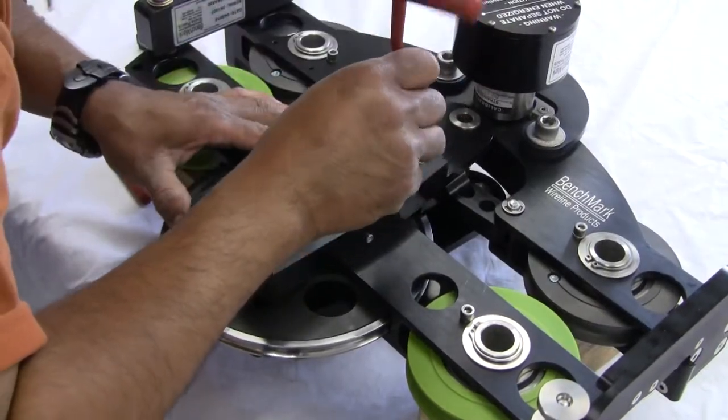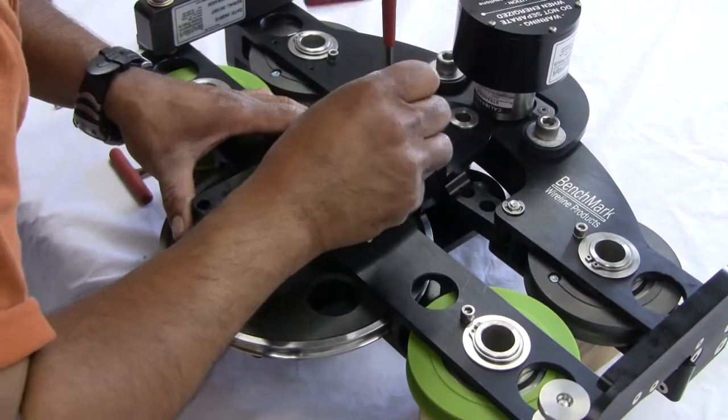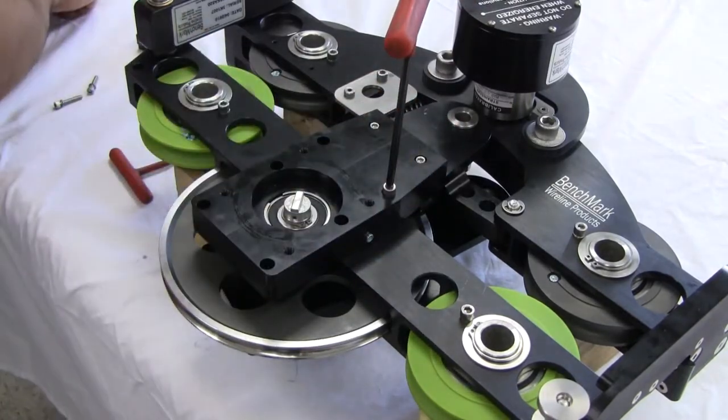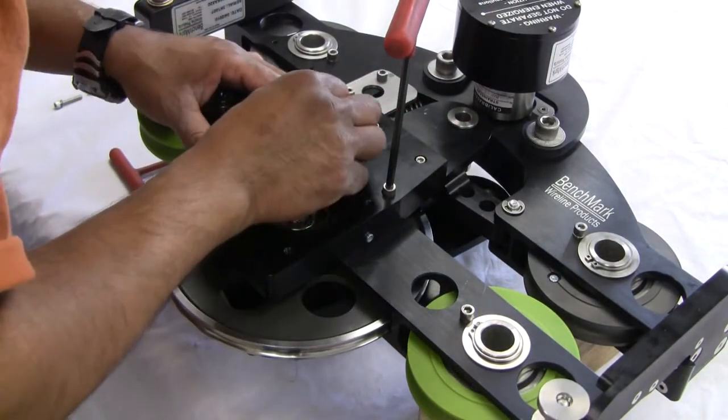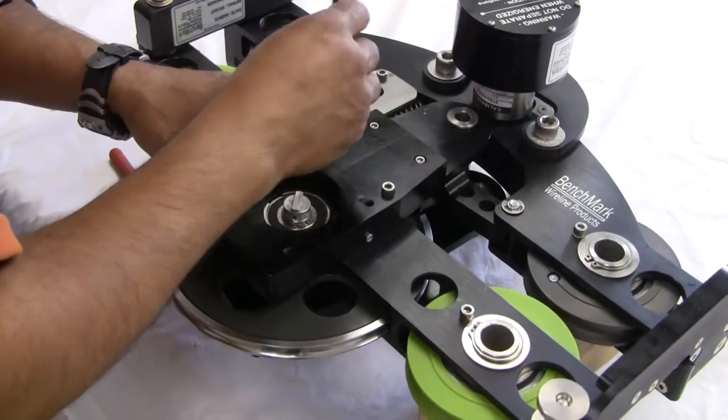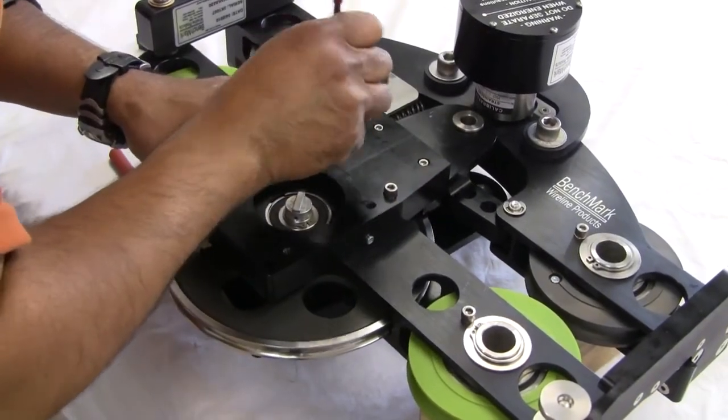Replace the four bolts holding the side plate in place. Loosely start one bolt to align the plate and then add the other three.